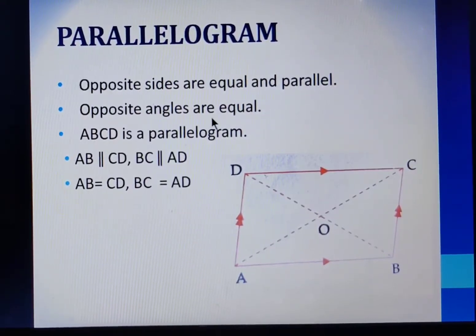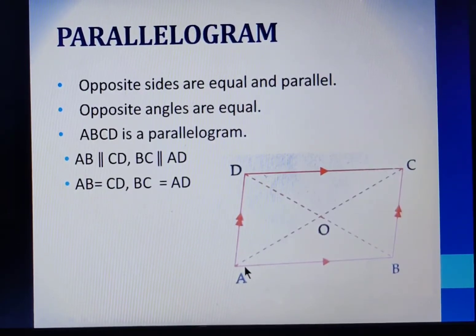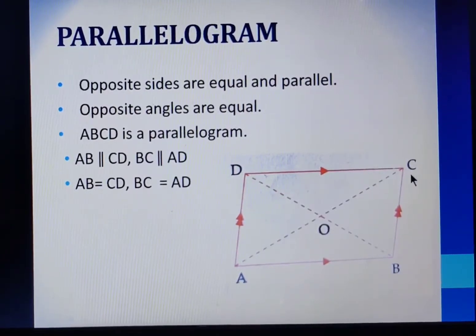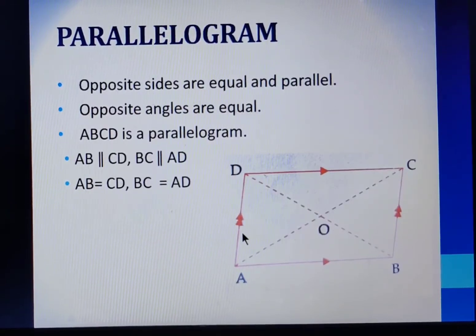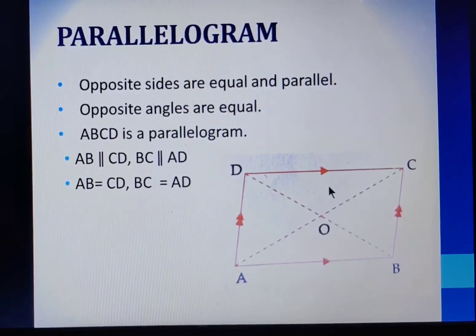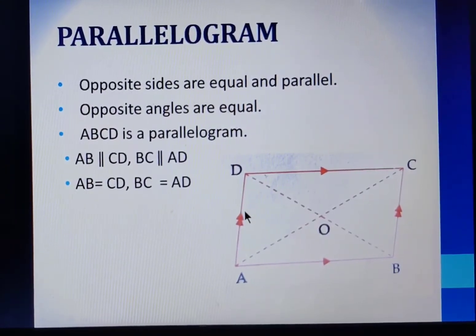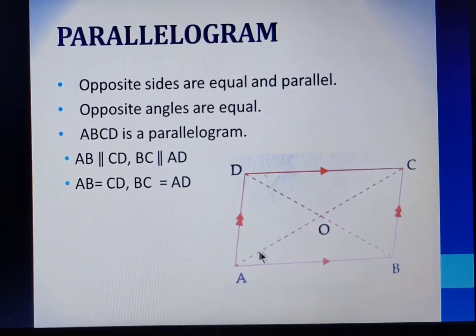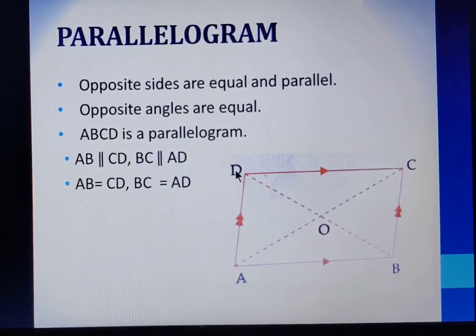Opposite angles are equal. Now, if we consider this parallelogram, we have AB parallel to CD, and BC parallel to AD. BC will be equal to AD. It also says opposite angles are equal, so angle A will be equal to angle C, and angle B will be equal to angle D.